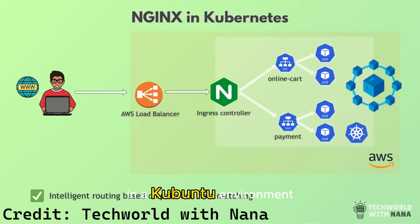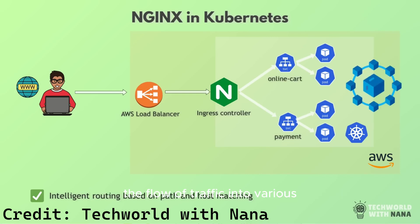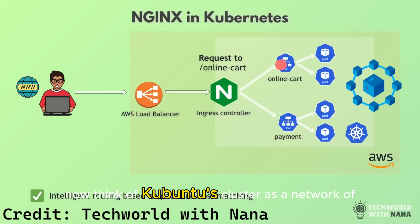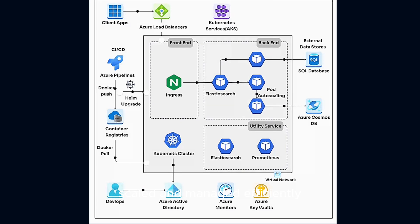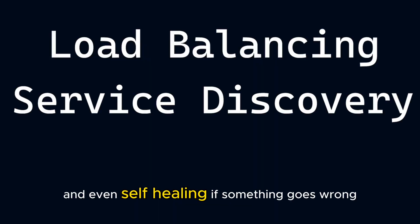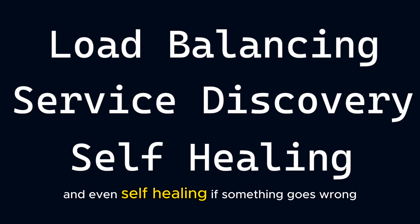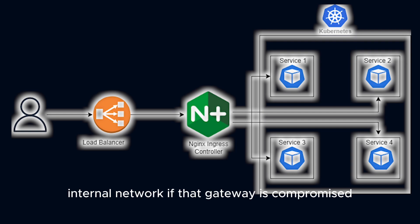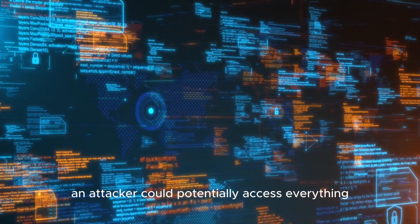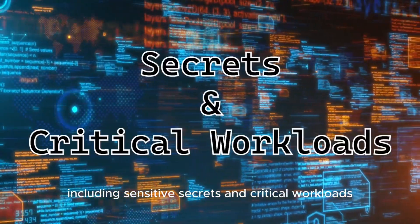When Ingress NGINX is deployed into a Kubernetes environment, it becomes a primary gateway into your cluster, managing and securing the flow of traffic into various containerized applications. Think of a Kubernetes cluster as a network of interconnected servers, or nodes, that run containerized applications. Kubernetes orchestrates these containers, ensuring they're deployed, scaled, and managed efficiently — handling load balancing, service discovery, and even self-healing. The Ingress controller, like Ingress NGINX, is a critical entry point where external traffic meets your cluster's internal network. If that gateway is compromised, an attacker could potentially access everything behind it, including sensitive secrets and critical workloads.